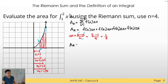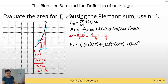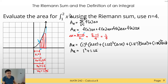Substituting into the function x squared, we get: 1 squared times 0.25, plus 1.25 squared times 0.25, plus 1.5 squared times 0.25, plus 1.75 squared times 0.25. We can factor out 0.25: that gives us (1 squared plus 1.25 squared plus 1.5 squared plus 1.75 squared) times 0.25. Using a calculator, the Riemann sum is 1.96875. So this is our approximate area.